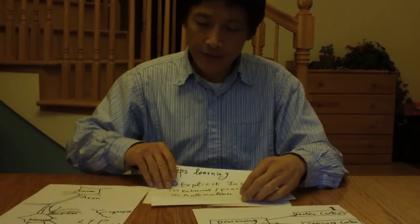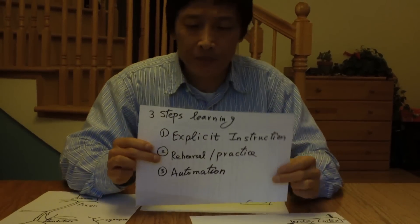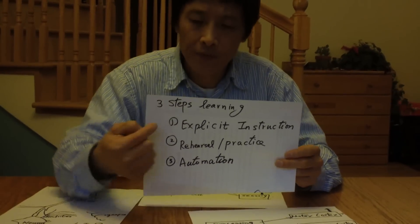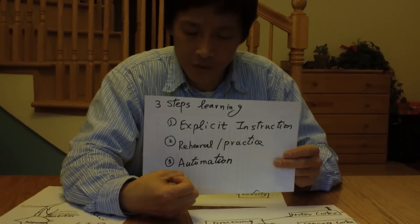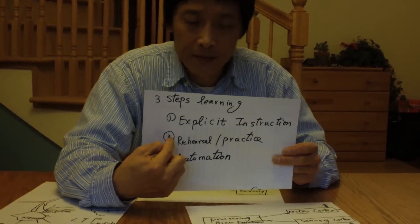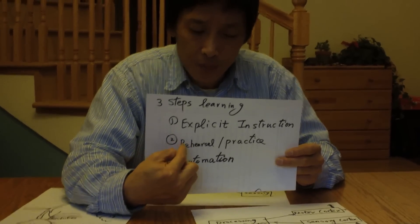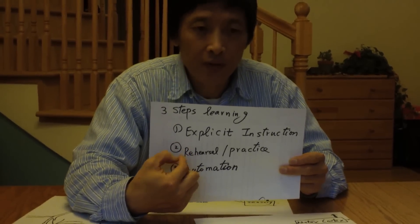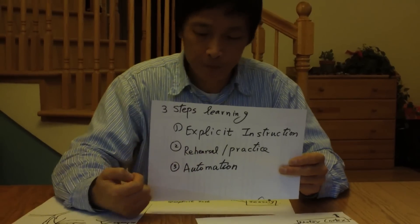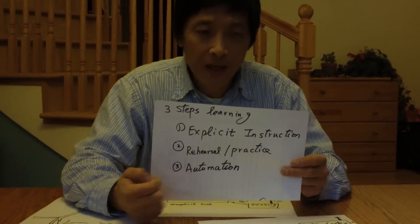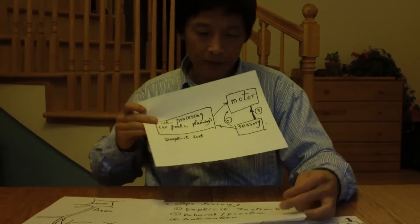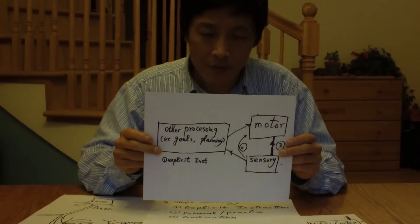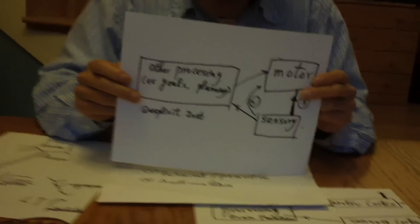Let's look at the three steps of learning. The first step is explicit instruction from your master. The second, you are trying to practice and rehearse the same thing over again. The third step is automation. Let's look at the overall picture in the brain. The three steps - how do they evolve?